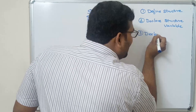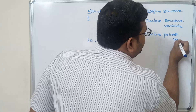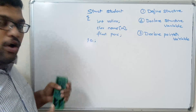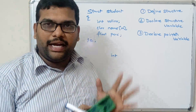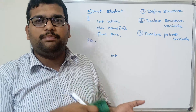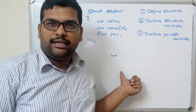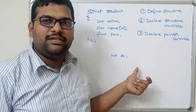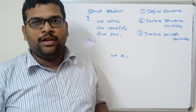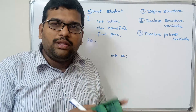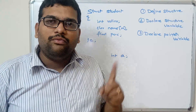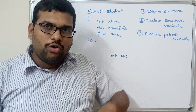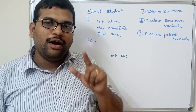Third: declare a pointer variable. Every pointer should have a data type. Whatever address we are storing into the pointer variable, that data type should be used for the declaration of that pointer. If a pointer holds the address of an integer variable, declare it with integer data type. If a pointer holds the address of a float variable, declare it with float data type. Similarly, here we are storing the address of a structure variable, so the pointer should be declared using the structure type.